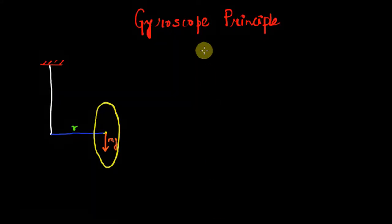Hello everyone, welcome back. In this video we are going to learn about the gyroscopic principle. A gyroscope is an instrument which helps to provide stability to objects. Gyroscopes have many applications — for example, in rockets they are used to make sure the rocket follows a steady path and does not deviate from it.